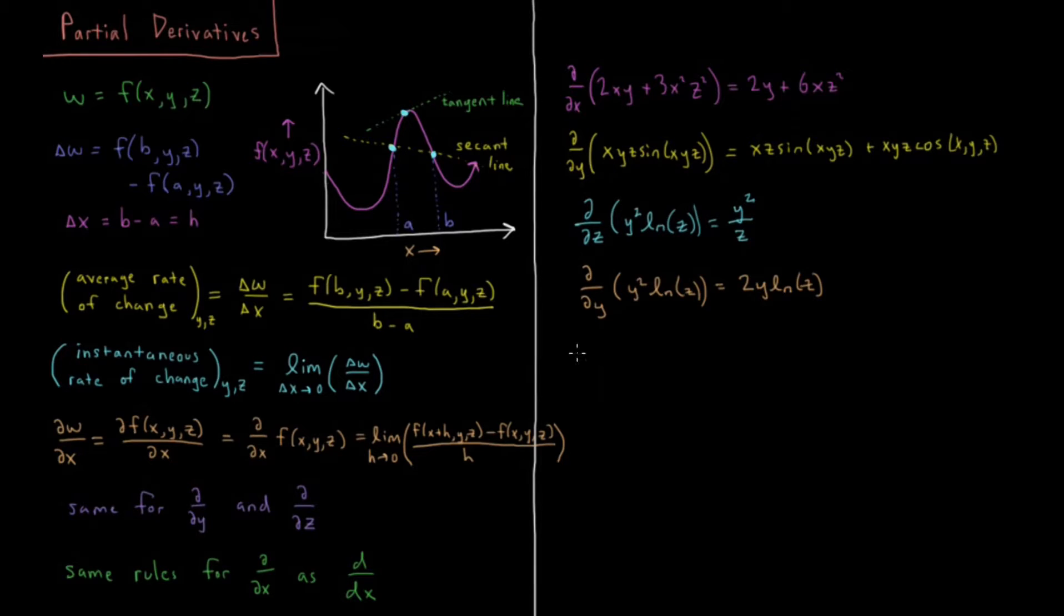Let's do some final examples. Let's say partial derivative with respect to y of xy·e^(-zy²). That's a product rule and a chain rule, so that's going to be x·e^(-zy²) minus 2zxy²·e^(-zy²).